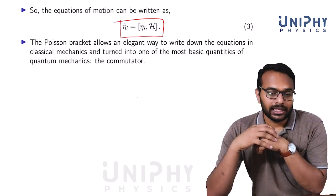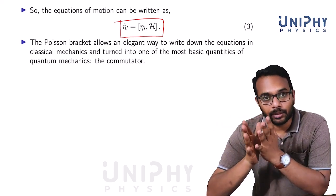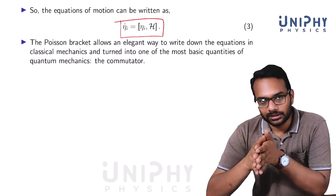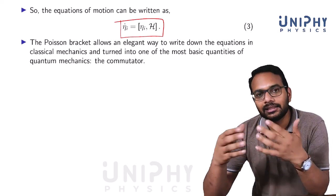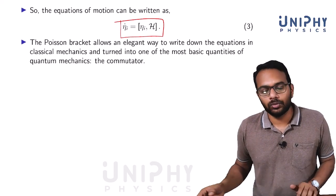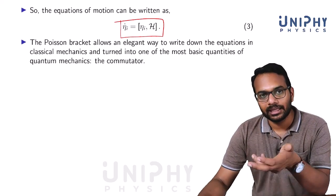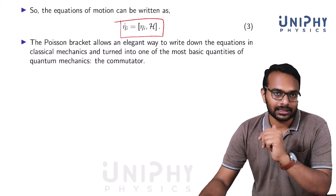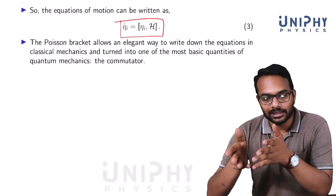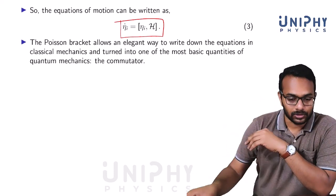The Poisson bracket allows an elegant way to write down equations in classical mechanics, and it turns into the most basic quantities of quantum mechanics — the commutator. We can take the Poisson bracket in classical mechanics and turn it into corresponding commutators in quantum mechanics. This procedure is known as quantization — that is the way to go from classical mechanics to quantum mechanics.